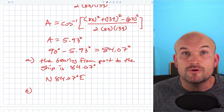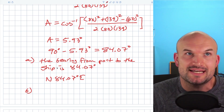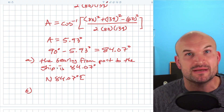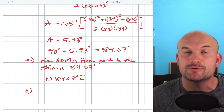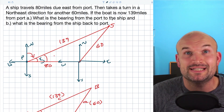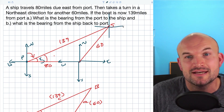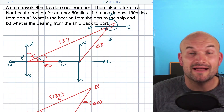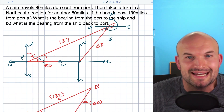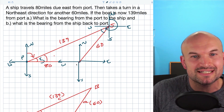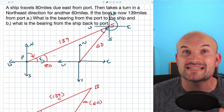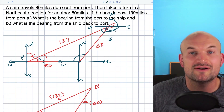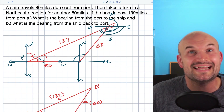The next question asks for the bearing from the ship back to port. Think of it this way: the first answer was from station control at port trying to locate the ship. Now the ship needs to return to port — what direction should it turn? To find that, we need to create another cardinal direction from the ship's position. Because these north lines are parallel and both intersect the red line, by alternate interior angles, the angle we find in the triangle equals the corresponding angle at the ship.